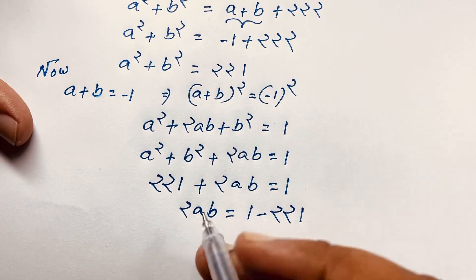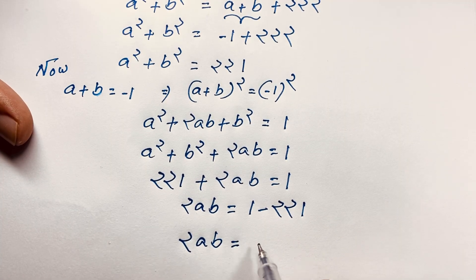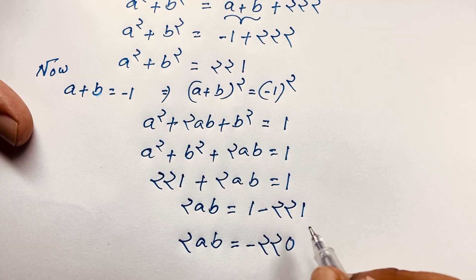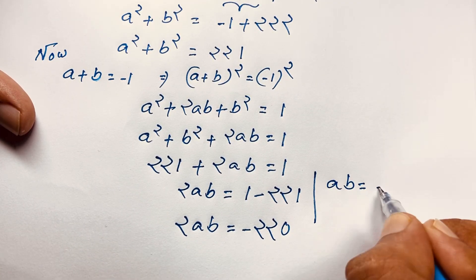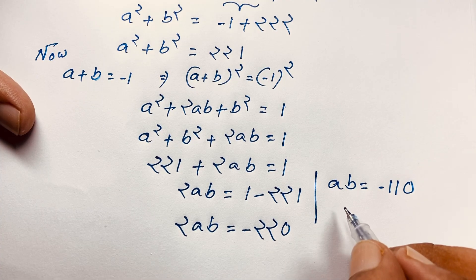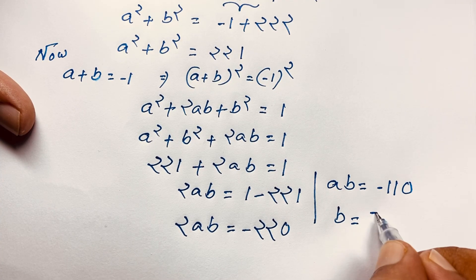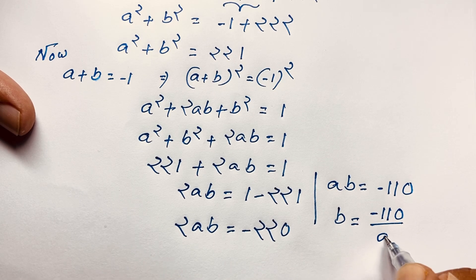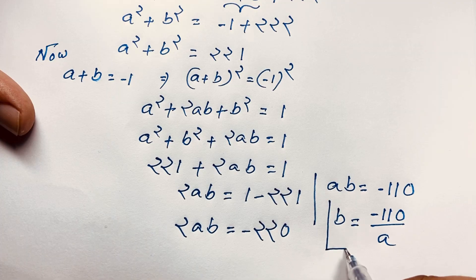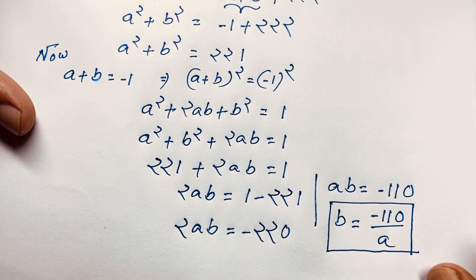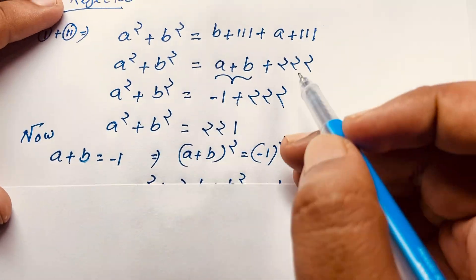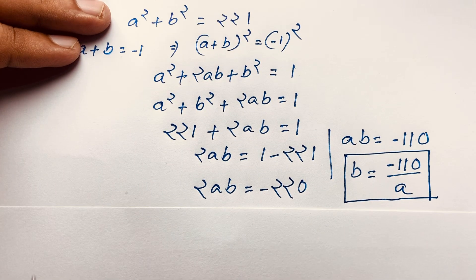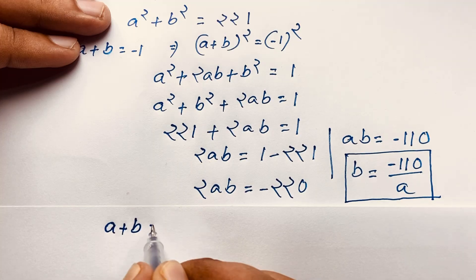So 2ab equals 1 minus 221, which gives 2ab equals negative 220. Dividing both sides by 2, we find ab equals negative 110. Therefore b equals negative 110 divided by a. Now going back to a plus b equals negative 1, I substitute b.